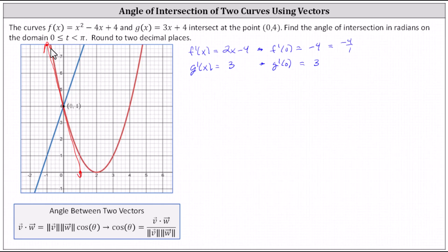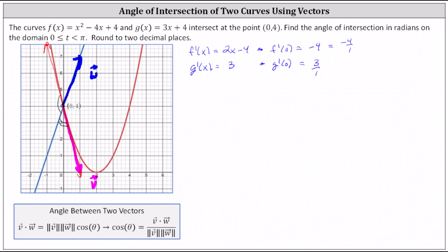The angle of intersection is the same as the angle between the two tangent lines. Notice there are two angles of intersection — an obtuse angle and an acute angle. We'll be determining both. To find the angle of intersection, we'll form two vectors that have the same slope as f prime of zero and g prime of zero. Because f prime of zero equals negative four, we form vector v starting at the point of intersection, going down four units and right one unit, giving it a slope of negative four. For vector w with slope positive three, we start at the point of intersection and move up three units and right one unit.